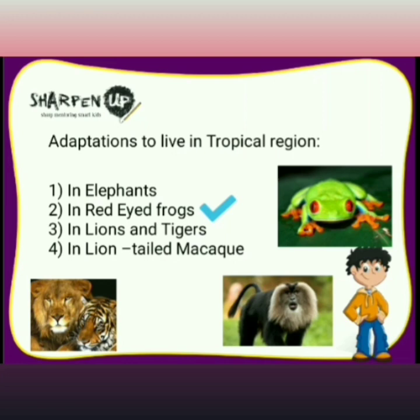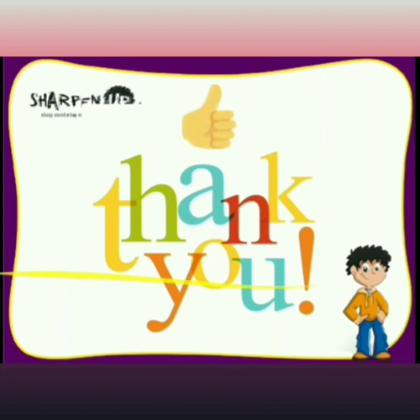The lion-tailed macaque, also called the beard ape, has a silvery white mane surrounding the head from the cheeks down to the chin, and a medium-sized tail like that of a lion. It is a good climber and lives in trees, feeding on fruits, seeds, young stems, and plants. It only comes down when it cannot find food in the trees, and it also eats food found under the bark of trees.